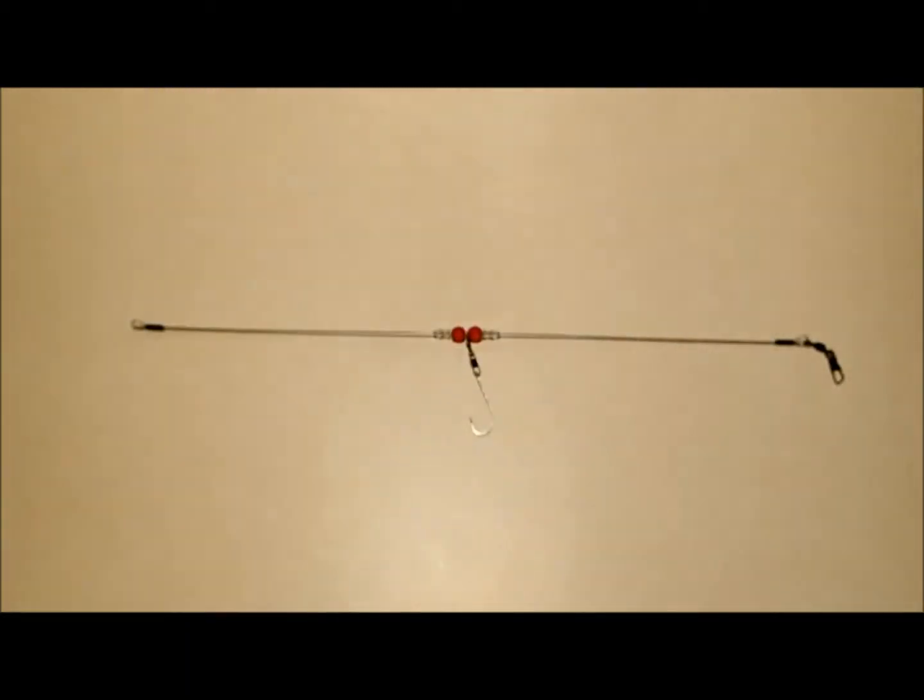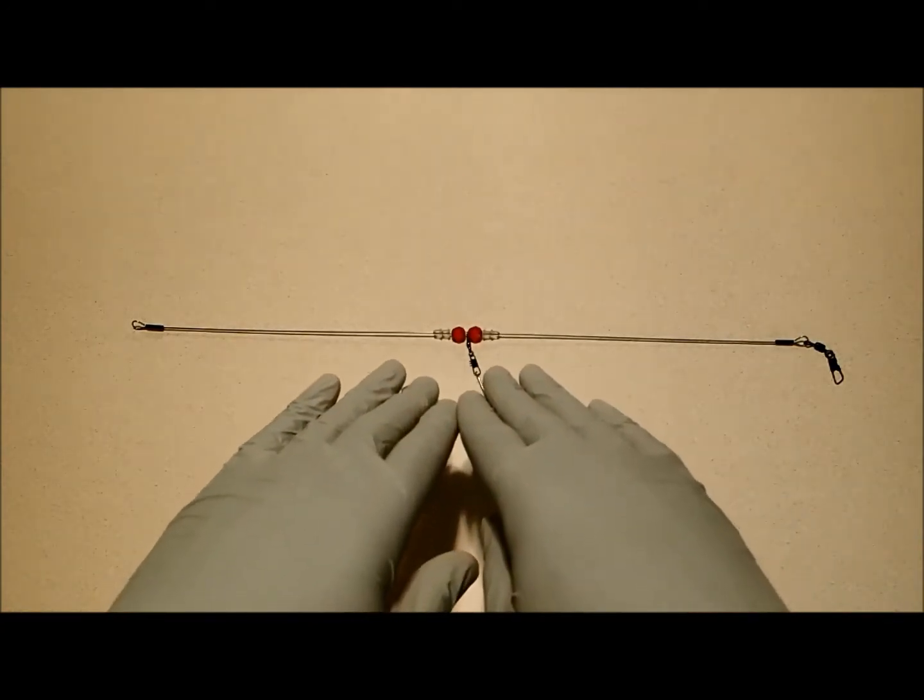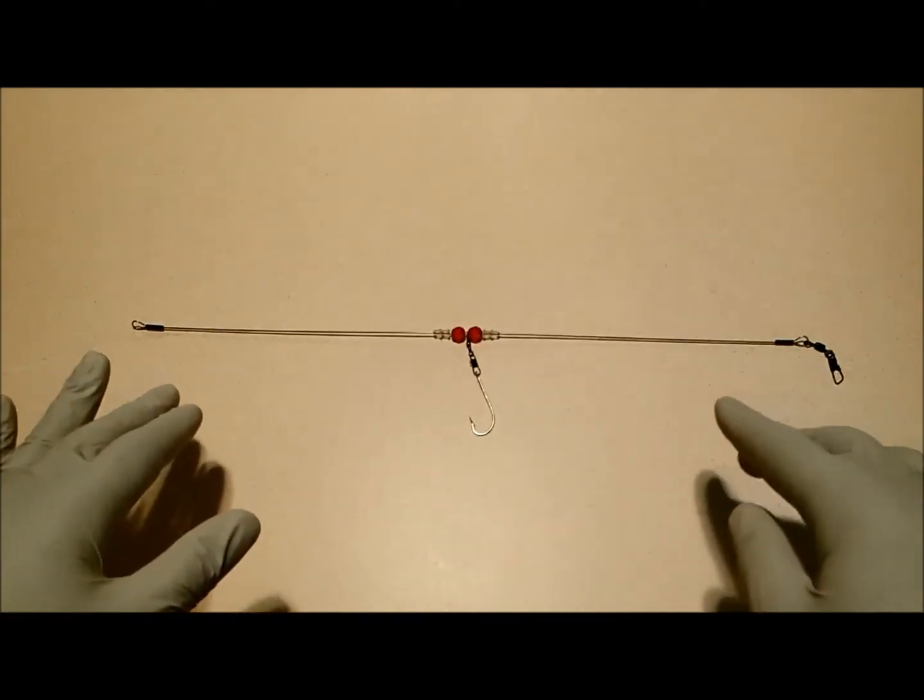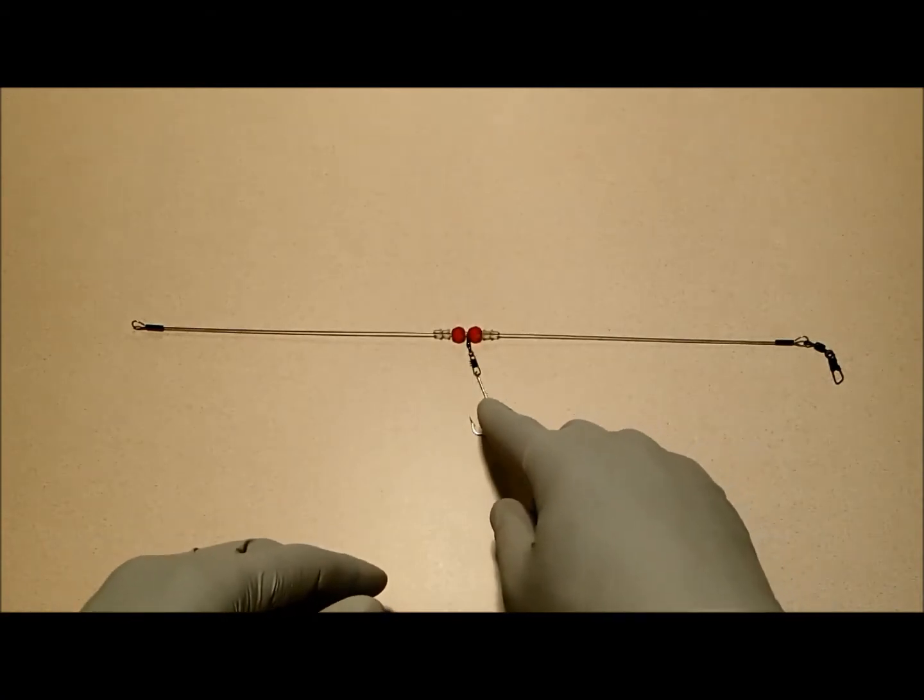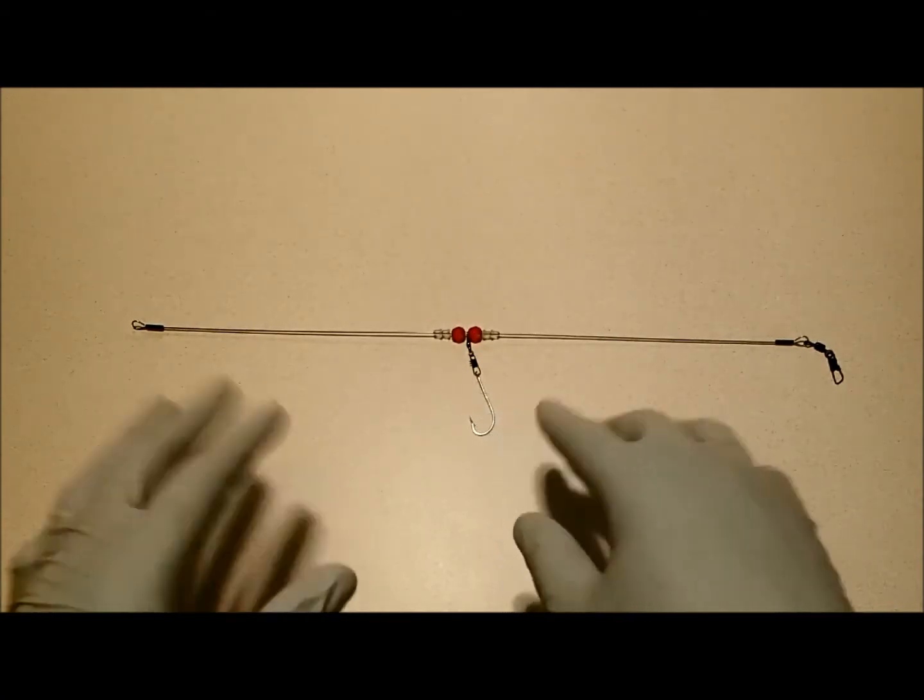Our drop shot knot rig is designed a little differently. In fact, it's designed to be fished horizontally with a hook that hangs vertically from a small swivel. Why is that important?